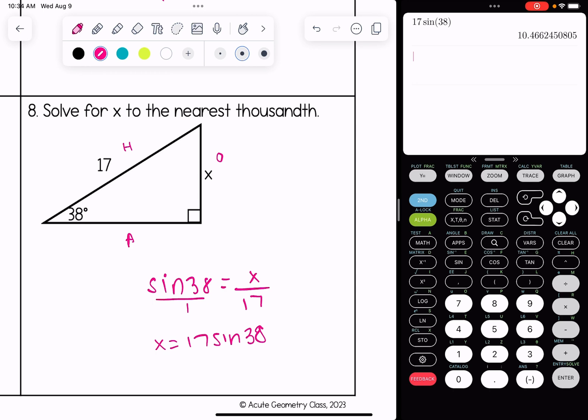Three decimal places. That gives me 10.466 as our answer for number eight. The next video in this playlist will go over how to use right triangle trigonometry in order to find missing angles.